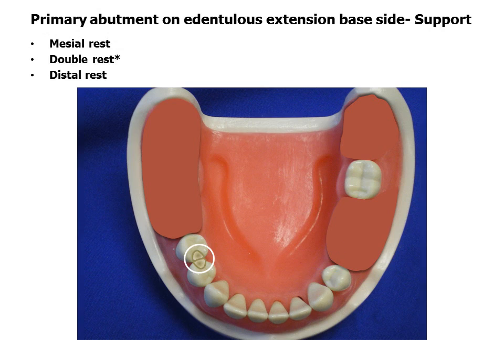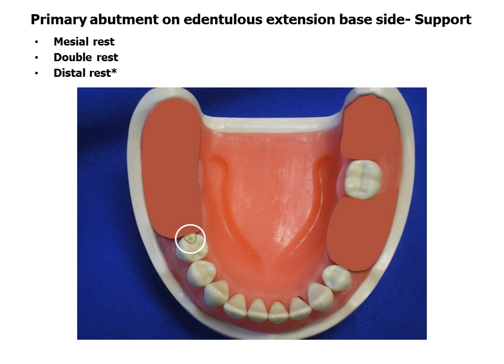Rest placement on the distal extension side is normally on the tooth adjacent to the edentulous space. Several options are available, but the mesial aspect of the tooth is preferred due to mechanical considerations. Mounted diagnostic casts are helpful in planning rest placement. Avoidance of habitual occlusal contact is desirable.